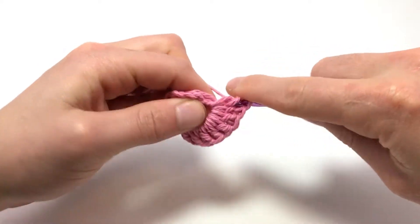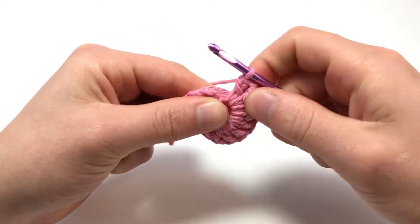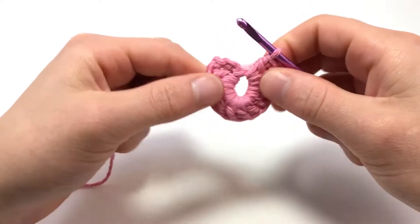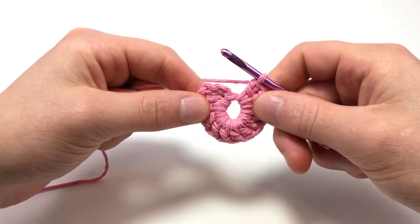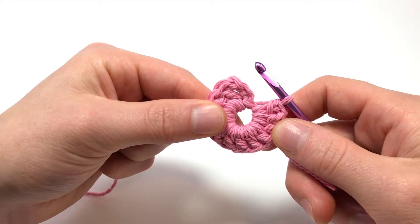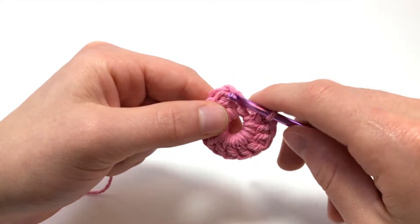When we get to the end, we want to connect the stitch we just made with the first stitch, the chain 3, to finish the round. You do this by making a slip stitch into the last of the 3 chains you made before round 1.